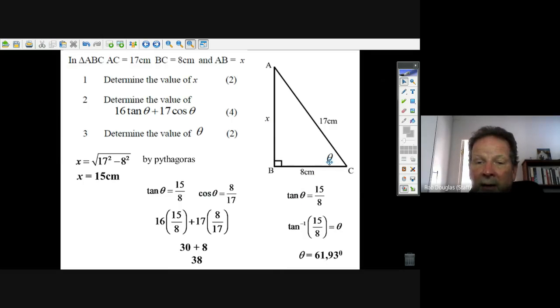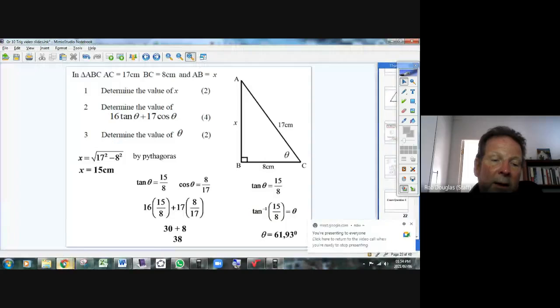The tangent of the angle is opposite over adjacent, 15/8. Ask your calculator for tan⁻¹(15/8), and it'll tell you that theta = 61.93 degrees. That's an example of an exam question.